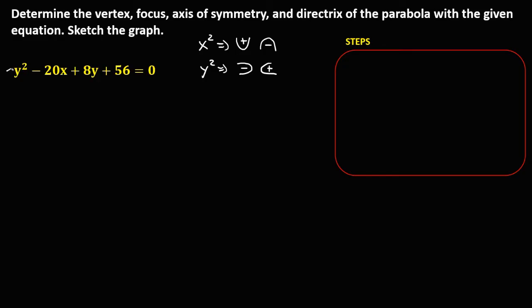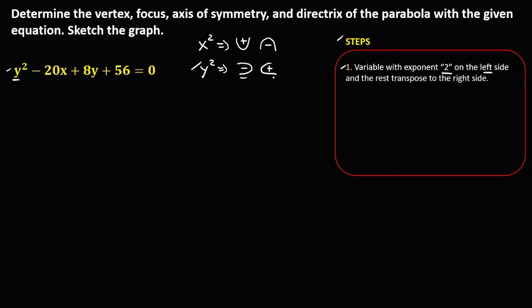To solve this problem, we follow these steps. First, place the variable with exponent 2 on the left side and transpose the rest to the right side. In the given equation, y is the variable with exponent 2, so this parabola opens to the left or to the right. So we have y squared plus 8y on the left side, and the rest transposed to the right side.